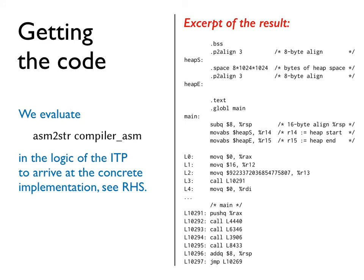The next step is that we want to get our hands on the assembly code. To do this, we simply evaluate inside the ITP asm-to-str applied to compiler-asm. An excerpt of the result of this evaluation is shown on the right-hand side.